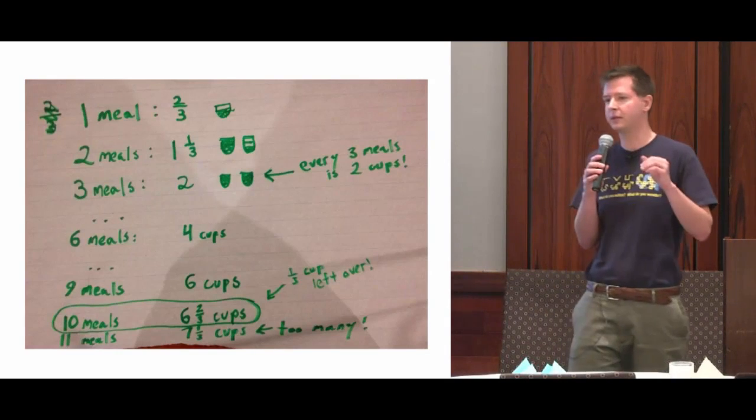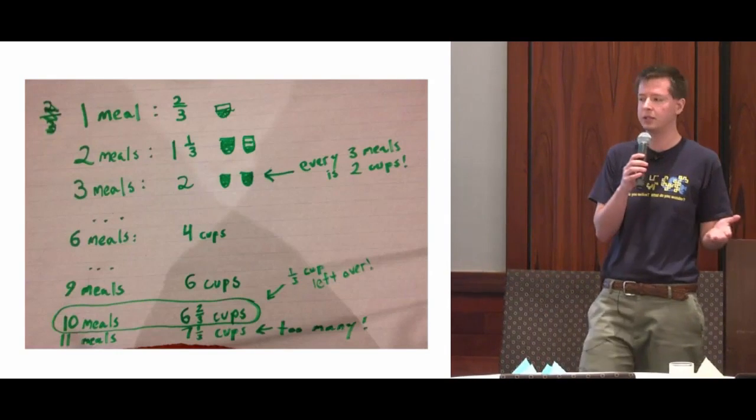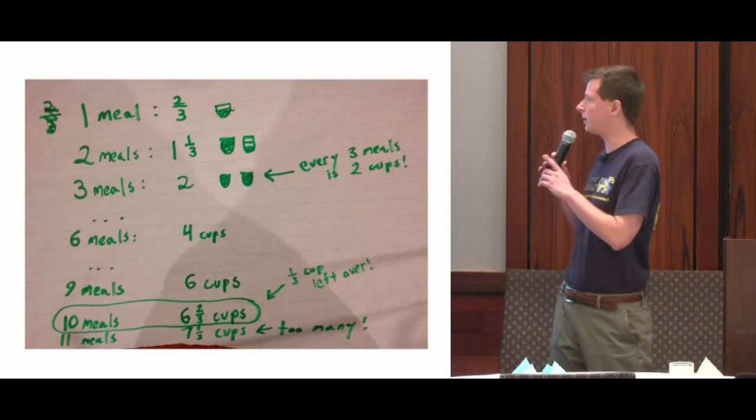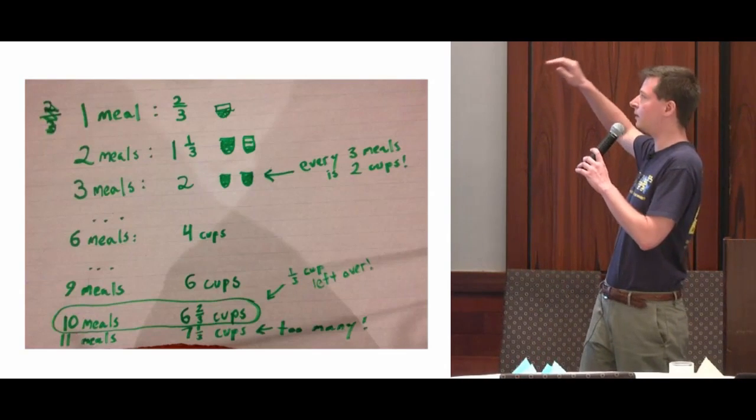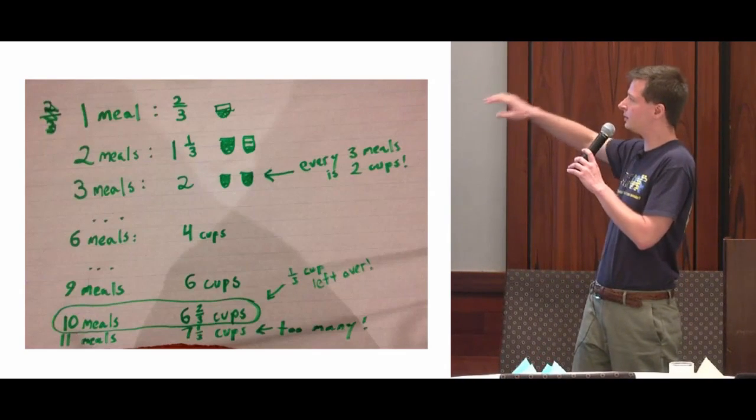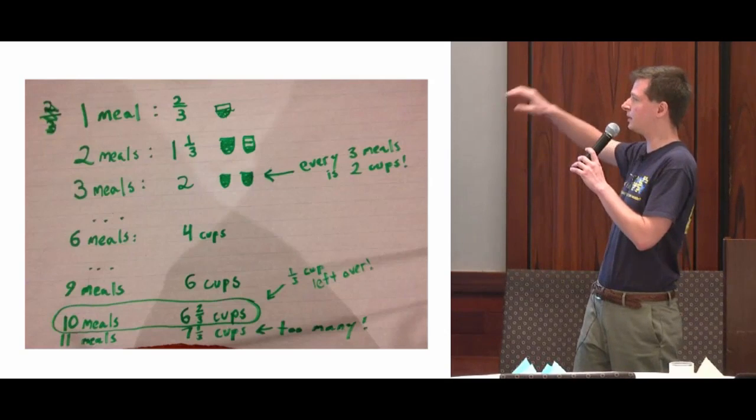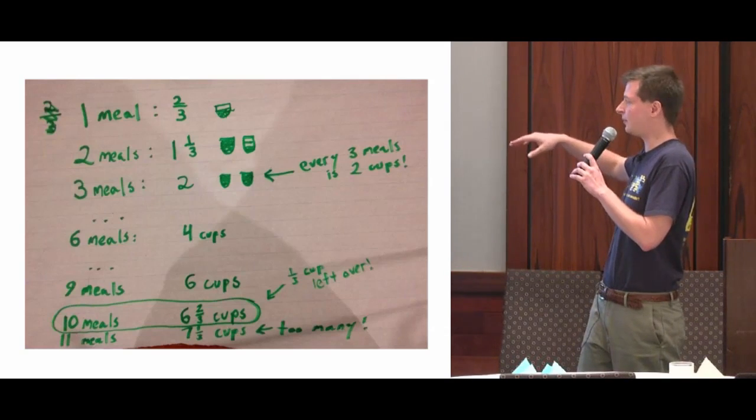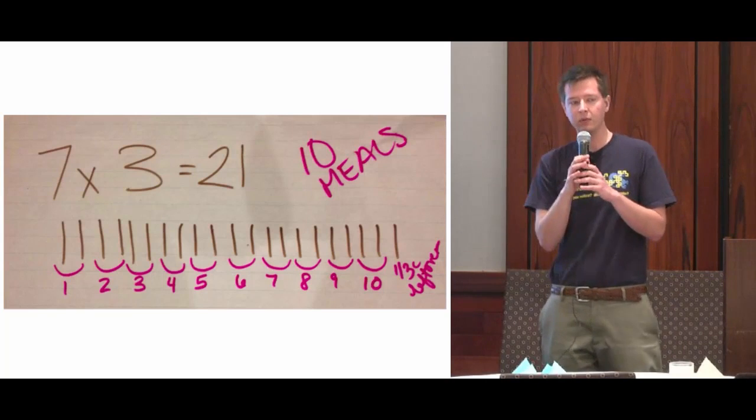Another really common method is counting up. Students call this guess and check. They start with one meal uses two-thirds cups, two meals uses one and a third cups, three meals is two cups. Some groups will then skip ahead.